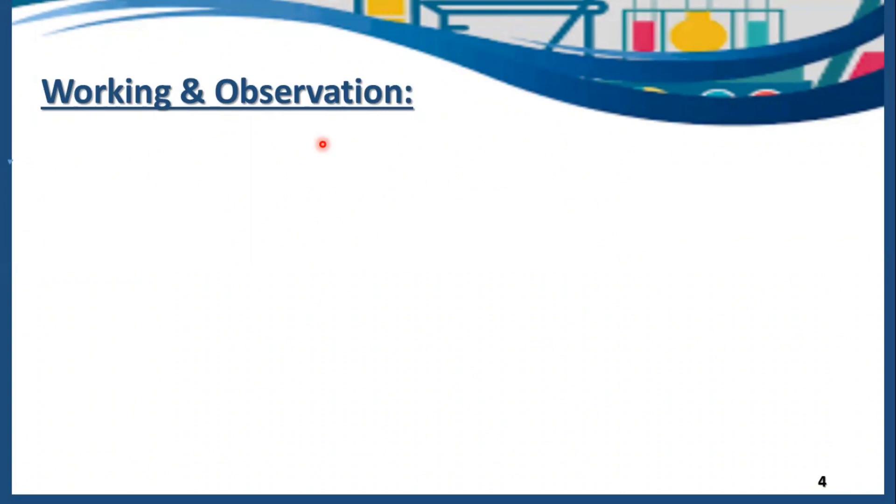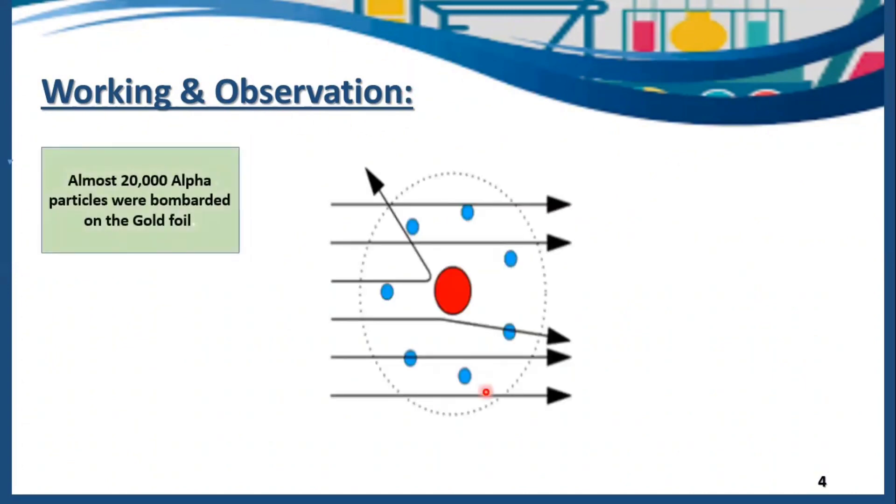Working and observation: How did Rutherford perform this experiment and what observations were made? Almost 20,000 alpha particles were bombarded on the gold foil. From these 20,000 alpha particles, 19,990 particles passed straight. Only few of them deflected, which are just almost 8, and just only one deflected back.